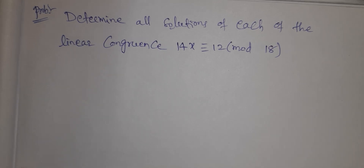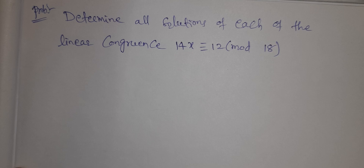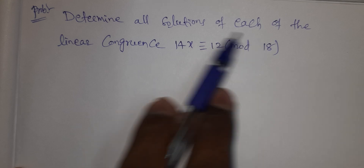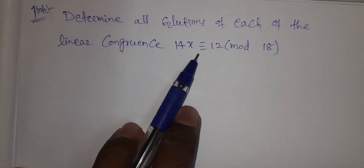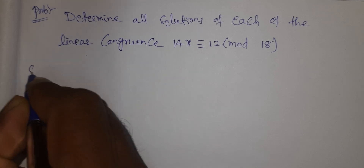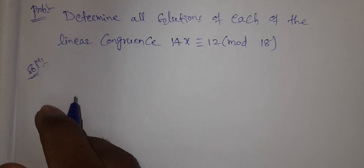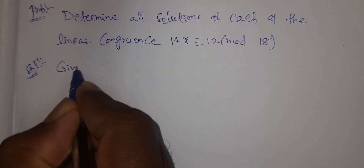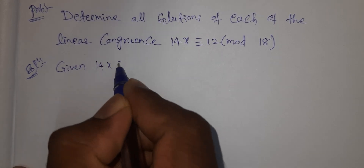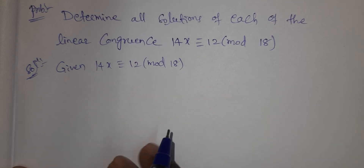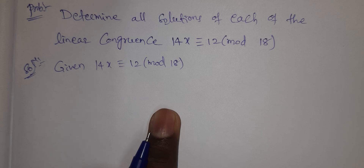Hi viewers, welcome to Rajesh Lekaloo. Today our topic is linear congruence problem — this is a very important problem. Determine all solutions of the linear congruence: 14x ≡ 12 (mod 18).